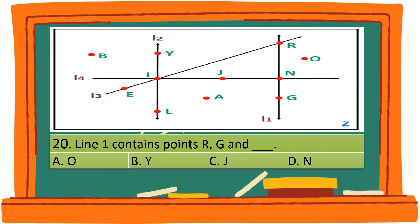Question 20. Line 1 contains points R, G, and blank. A. O. B. Y. C. J. D. N. The correct answer is D. N.